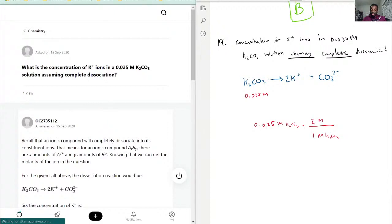So now we cancel these out. 0.025 times 2, so we're going to have 0.050 molarity of K+. This would be the concentration of K+ ions assuming complete dissociation based on the one-to-two ratio that we see in the formula.